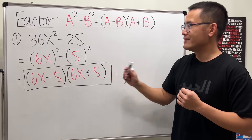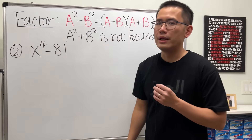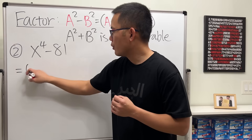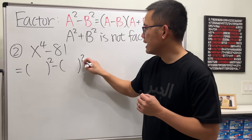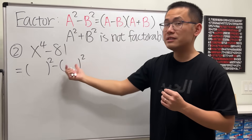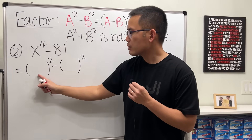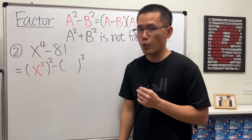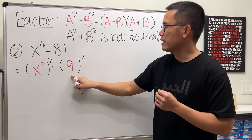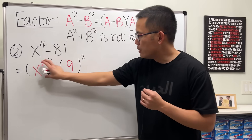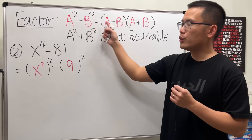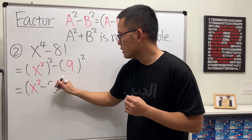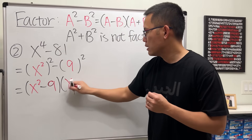For the next one we have x to the fourth power minus 81. Fourth power — well, it's square squared — so we open two sets of parentheses with squares on the outside. What square gives us x to the fourth power? That's x squared. And to get 81 we need 9, since 9 squared gives us 81. We have a squared minus b squared, so we get x squared minus 9 times x squared plus 9.